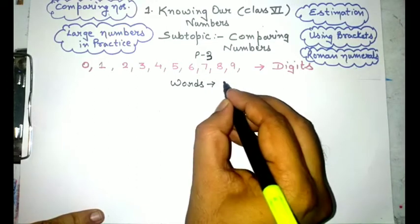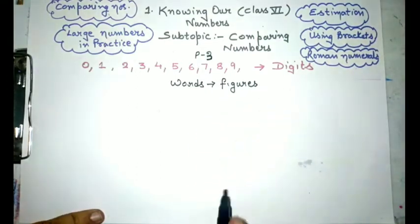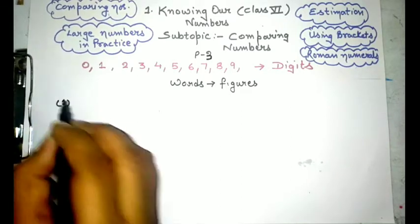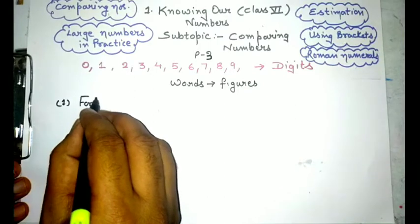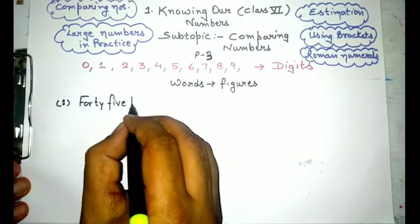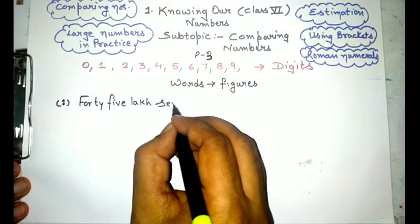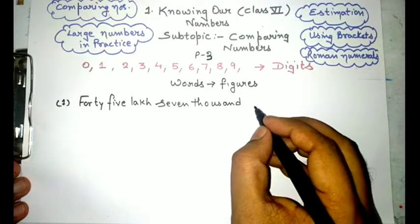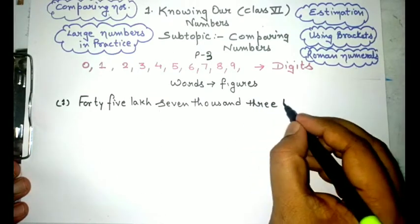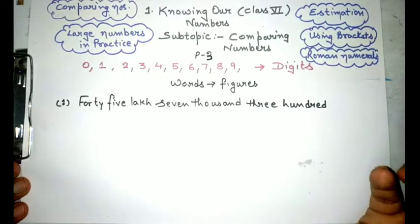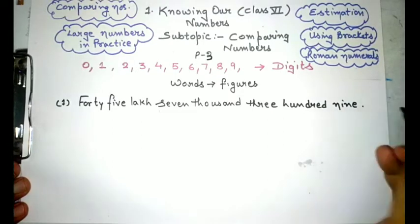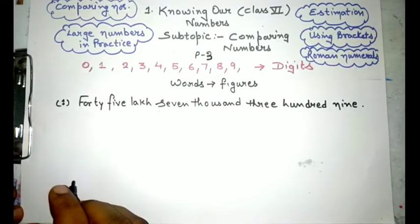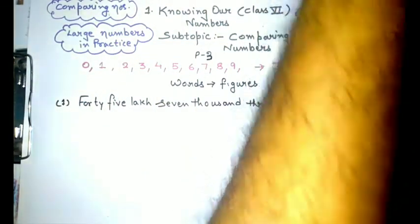So we are going to learn how to write a number in figures or numerals. For this, let us consider two examples. The first example is, say the number is 45 lakh 7 thousand 300 and 9. Always remember, we can use two spellings of lakh: either LAC or LAKH. Both are valid and acceptable.